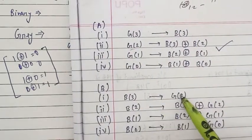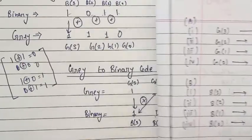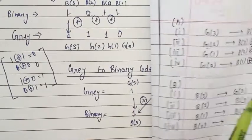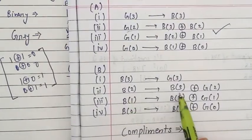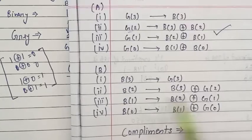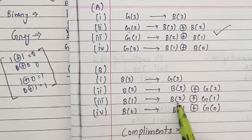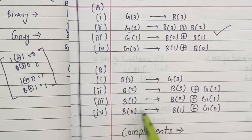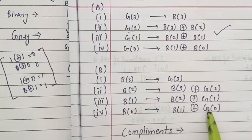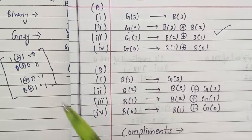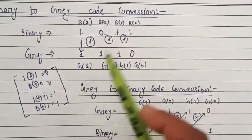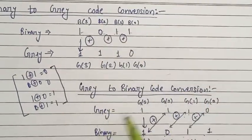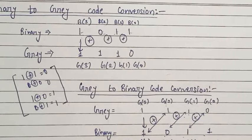For the theoretical representation of gray to binary: the first value b3 is the same as g3. For b2, you XOR b3 and g2. For b1, you XOR b2 and g1. For b0, you XOR b1 and g0. This is how we solve binary to gray and gray to binary code conversion.